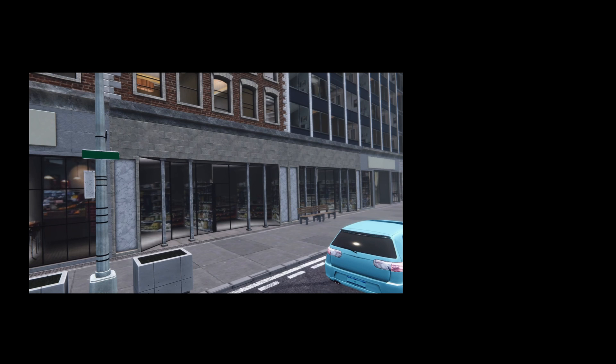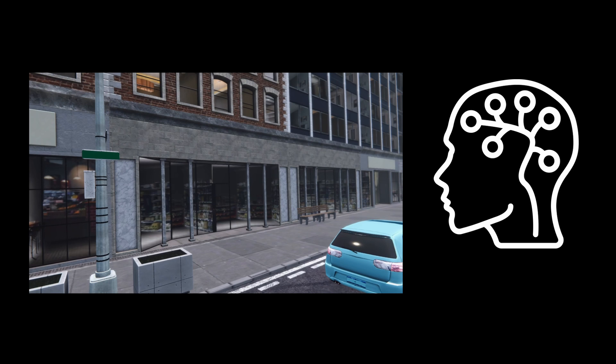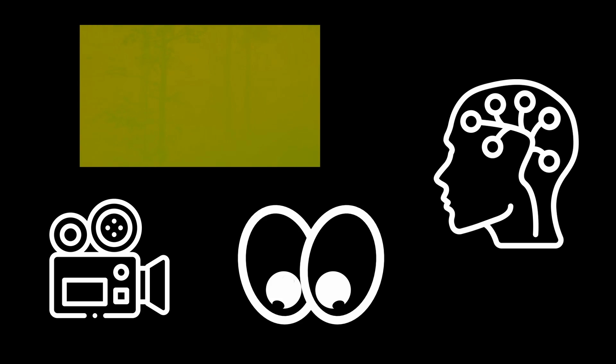For a given frame, we provide a perceptual model that describes the transformation of the image content so that vection is reduced while the image manipulations stay below the threshold of visibility. Input to the model is the screen-space object motion, the camera movement, and the gaze data.